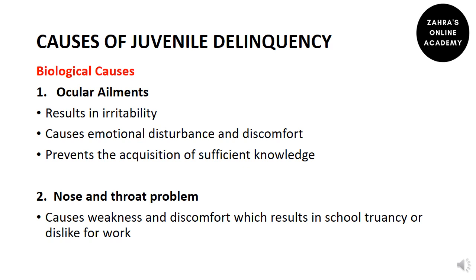The second biological cause is nose and throat problems. These cause weakness and discomfort, resulting in school truancy or dislike for work. If breathing is obstructed, it causes inefficiency in work, and the child would not be able to acquire sufficient knowledge for a bright future, ultimately moving toward delinquent means.